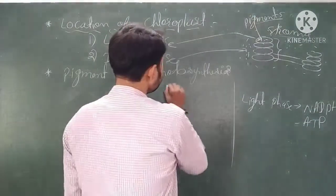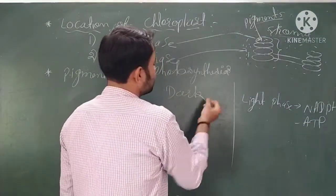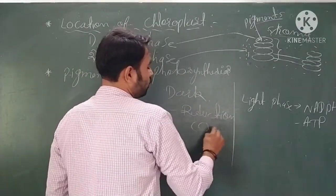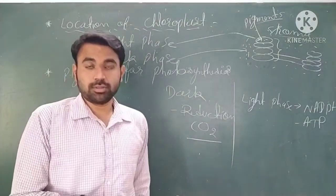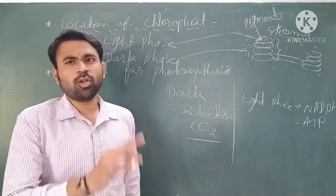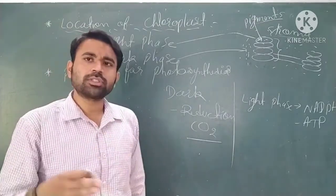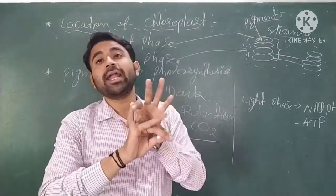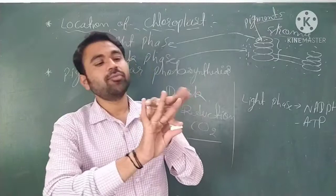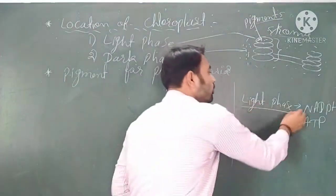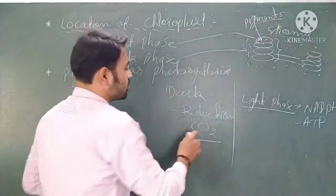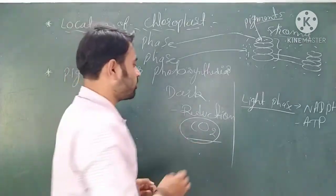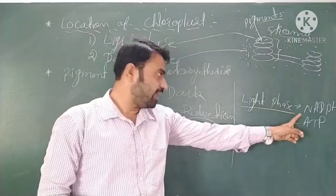What happens in the dark phase? The dark phase involves the reduction of CO2 from the atmosphere. As discussed in the previous lecture, photosynthesis requires three main things: CO2, water, and light. Light and water are used in the light phase, and CO2 is used in the dark phase.